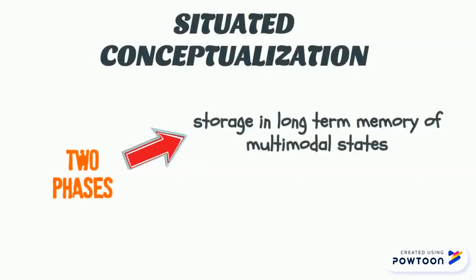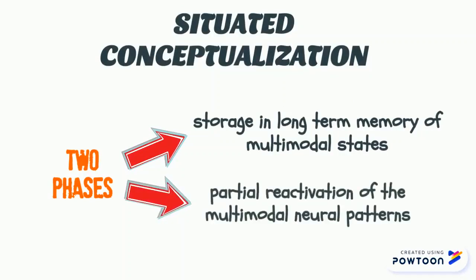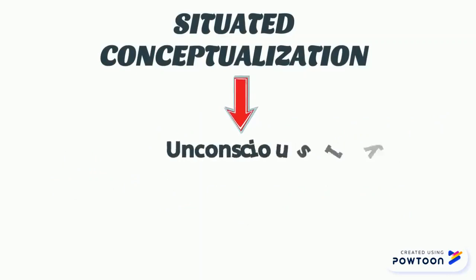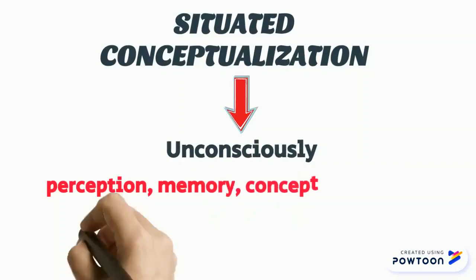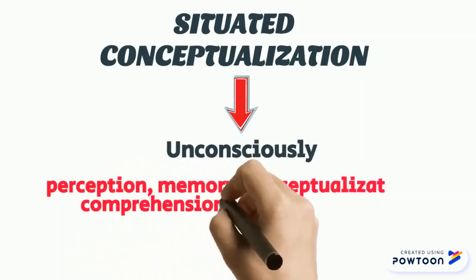All these neural patterns activate every time we think of a bike. A situated conceptualization has two phases: first, storage in long-term memory of multimodal states — that is, perception, action, and introspection; and second, the partial reactivation of the multimodal neural patterns for later reenactment.